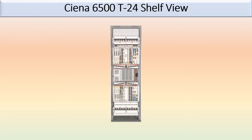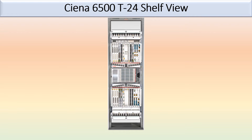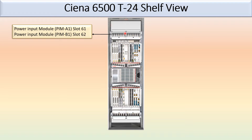Hello friends, today we will discuss about the Ciena 6500 T24 model shelf view. In the picture you can see the shelf view of the Ciena 6500 T24 model. On the top there is slot 61 and slot 62 — these two slots are fixed for the power input module PIM-A1 and PIM-B1.